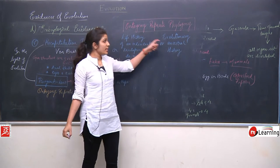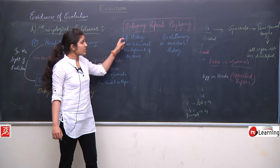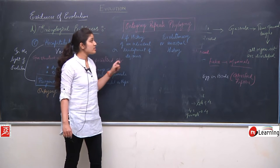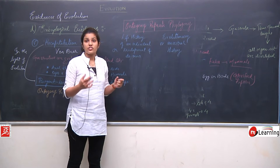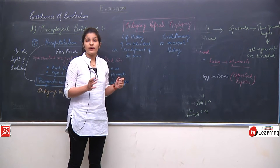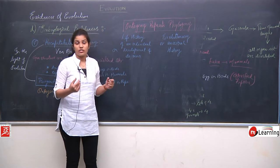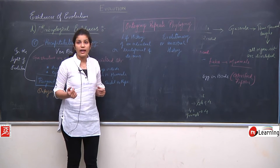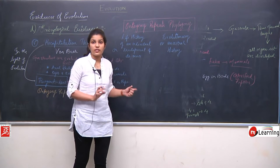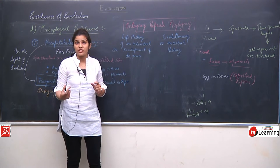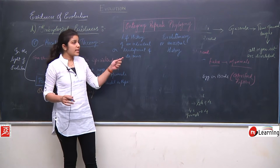Phylogeny means evolutionary or ancestral history. Ontogeny repeats phylogeny means that when an organism is developing — when it is in its growing age — it repeats the ancestral history during its own development.